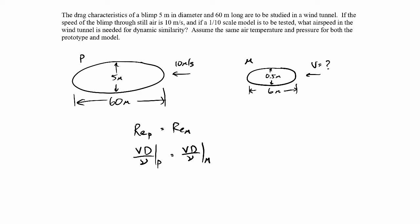So we can go ahead and rearrange this. First of all, you know that the kinematic viscosity of the air is the same, because we're using the same air temperature and pressure. It's the same air, so it's exactly the same. So the velocity in the model, which is what we're trying to find, will be equal to the velocity in the prototype times the diameter of the prototype divided by the diameter of the model.